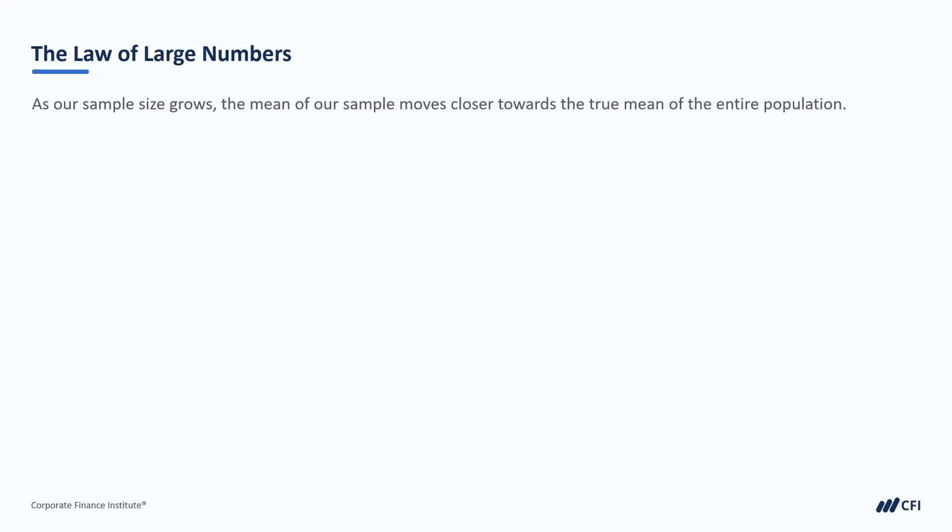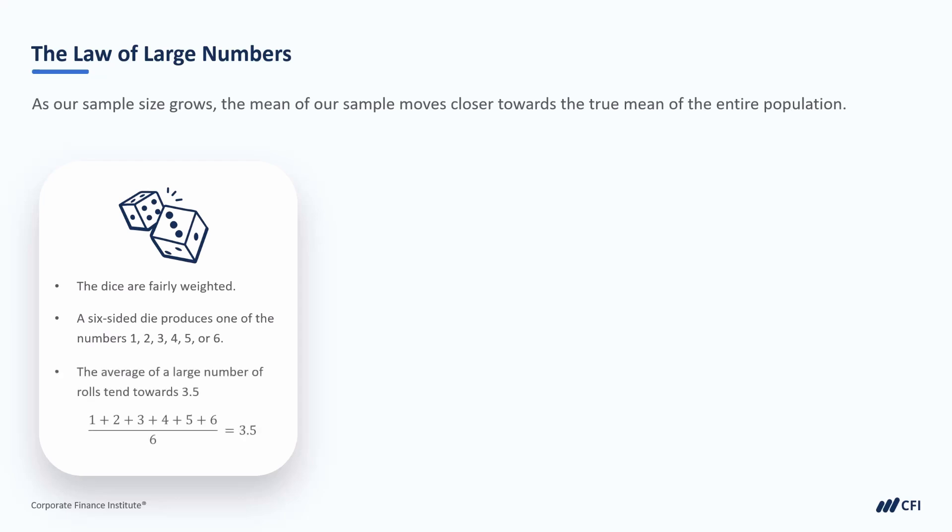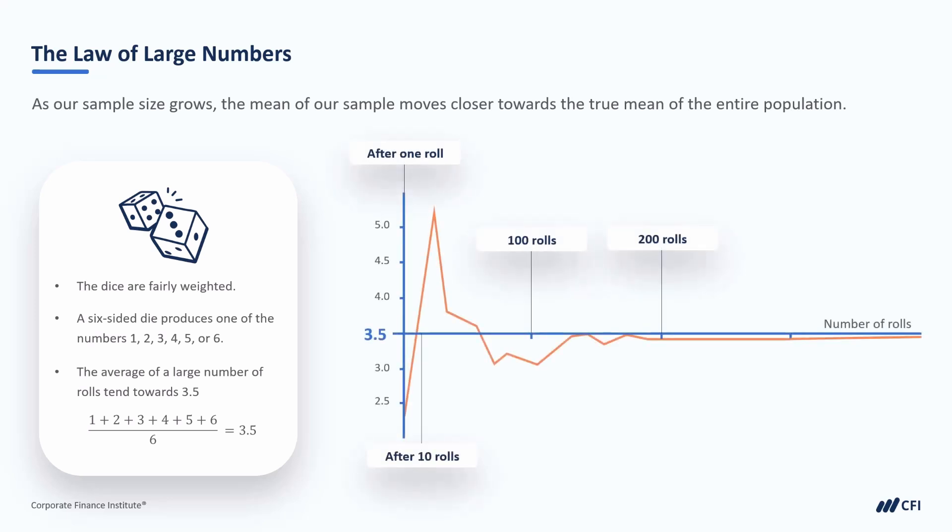This law is frequently illustrated with dice rolls. We all naturally understand that each side of a six-sided dice has the same probability of appearing, as long as the dice is fairly weighted. Ultimately, because of this feature of dice, we'd expect the average of a large number of rolls to be 3.5. When you simulate dice rolls, getting a mean of exactly 3.5 is actually fairly rare. You tend to see some variation from the mean due to randomness.